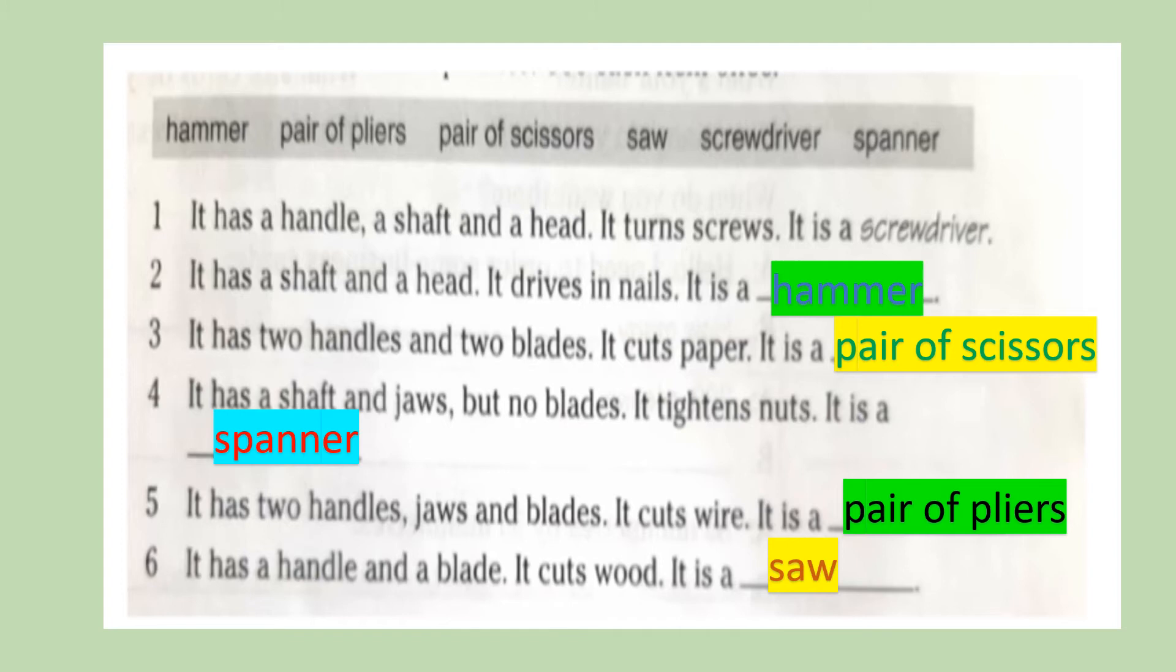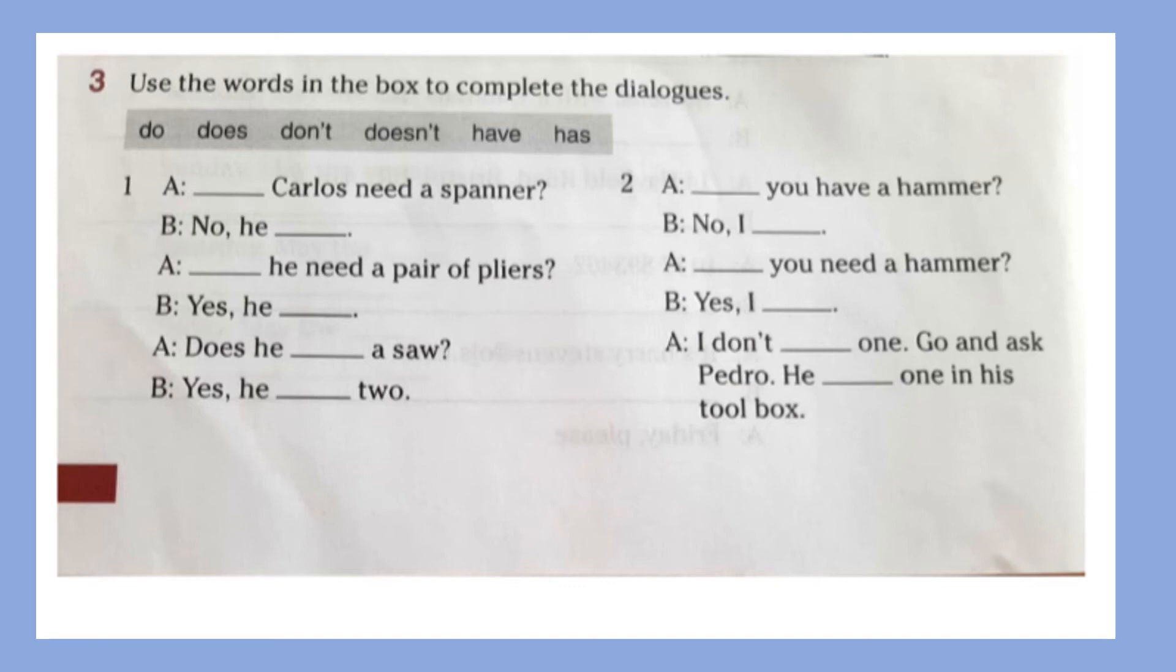Now let's move to the next exercise. In this exercise, number three, we need to use the words in the box to complete the dialogues. So here, we have a dialogue, a question and answer, and we need to complete either the question or the answer with the words in the box. The words in the box are do, does, don't, doesn't, have, and has.